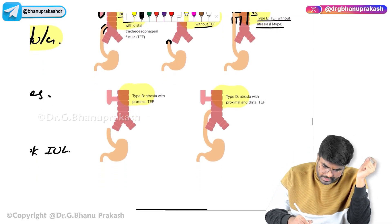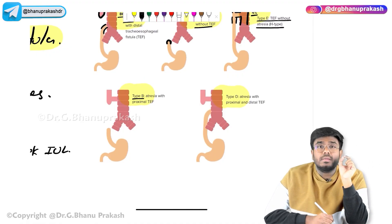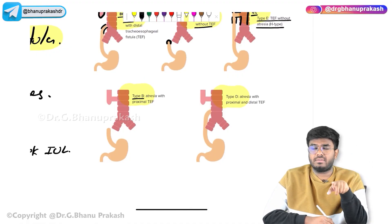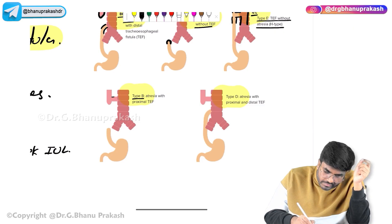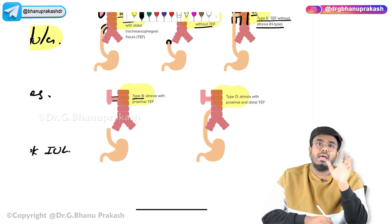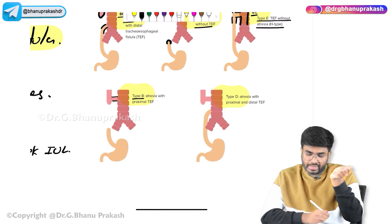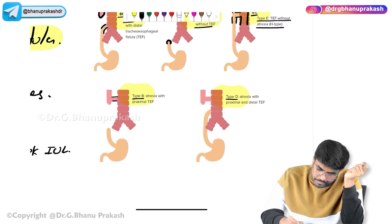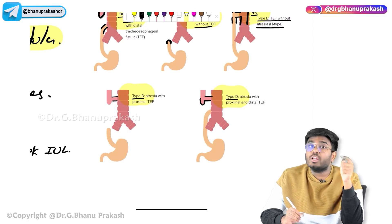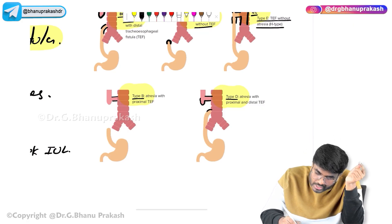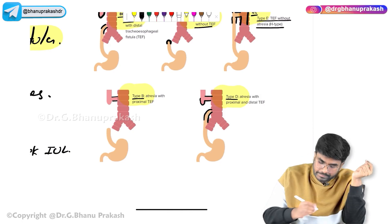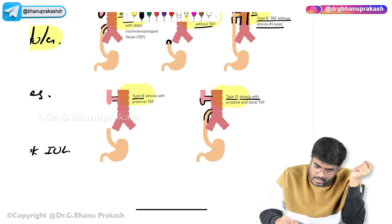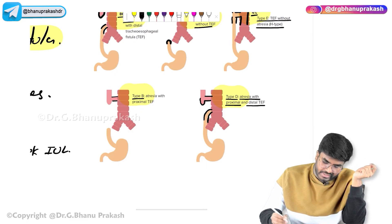In Type B, there is atresia — both proximal and distal — but the fistula is a proximal tracheoesophageal fistula. Type D is similar but modified: there is also a proximal tracheoesophageal fistula, and additionally the distal esophagus has a fistula with the trachea as well. So in Type D, both proximal and distal tracheoesophageal fistulas are present along with atresia.